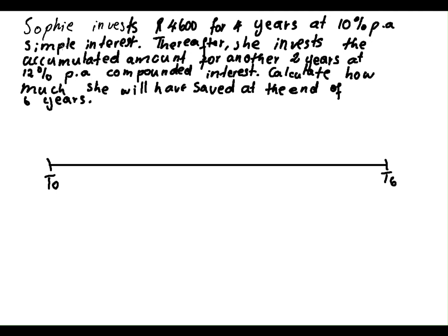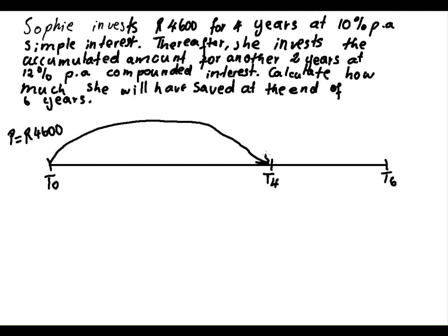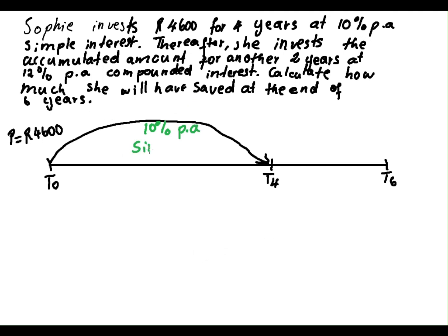What happens is that Sophie invests 4,600 rands. So our principal amount is going to be equal to 4,600 rands at T0. After 4 years, Sophie is then changing the plan. So this is T0, and then we sort out the time — here is 4 years. For the first 4 years, Sophie invests 4,600 rands at 10% per annum on a simple interest basis.